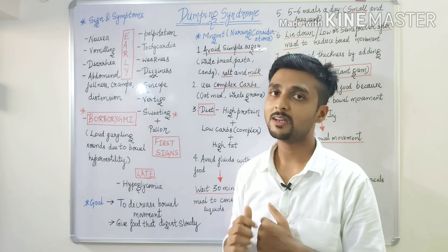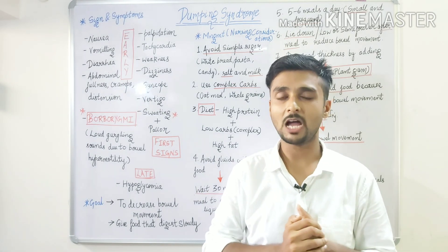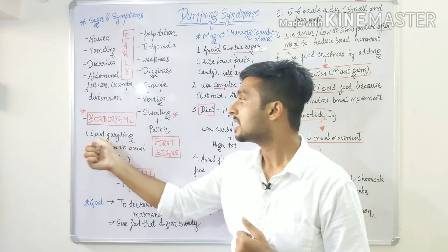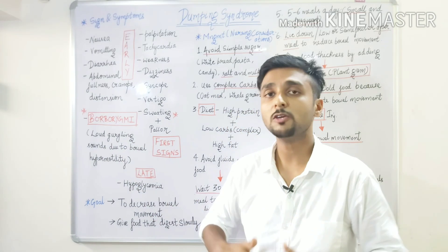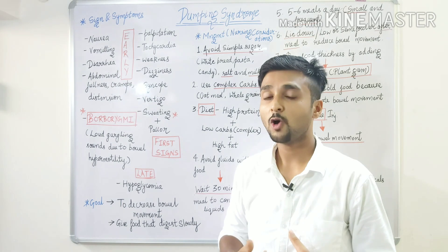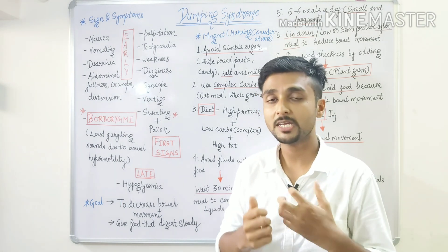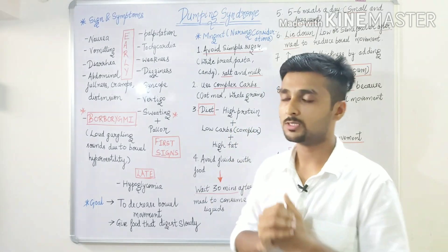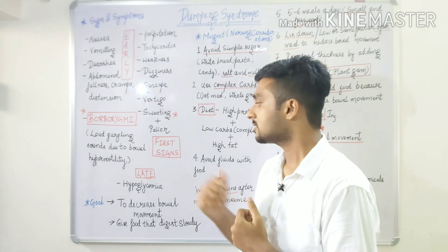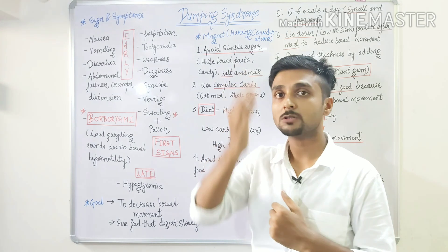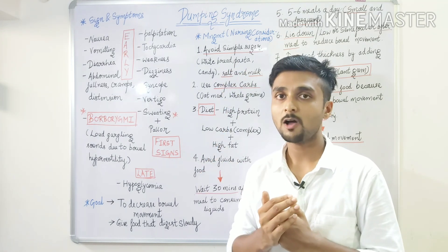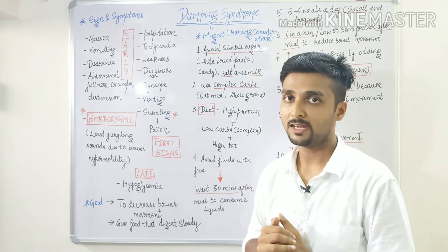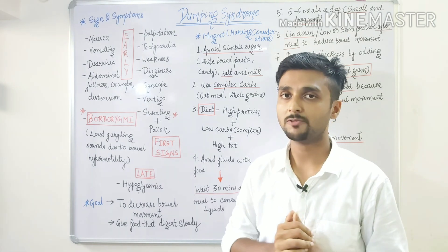These are all symptoms of early dumping syndrome, which occur within 10 to 30 minutes after food intake. Another early symptom is borborygmi — loud gurgling sounds — because the fluid level in the intestine increases, causing increased peristalsis and bowel motility. Additionally, because the blood glucose level rises rapidly and then insulin spikes, hypoglycemia is a late sign of dumping syndrome, occurring within 1 to 3 hours after food intake.